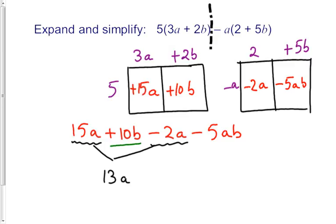Here is b, but I don't see any other b. ab is different to b, so I'm going to write positive 10b and negative 5ab, and that's your answer.